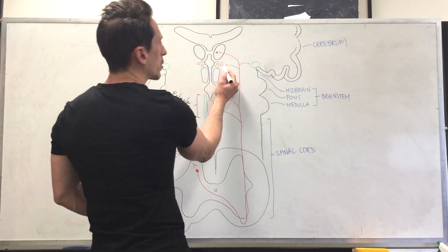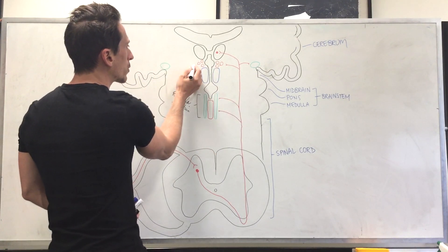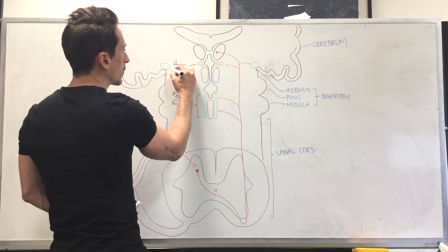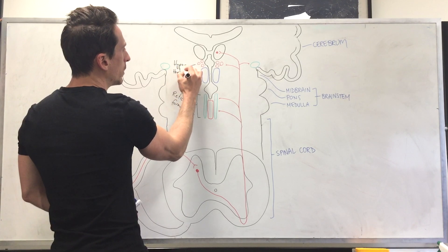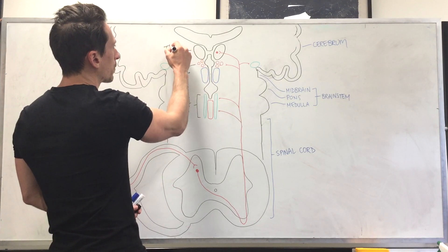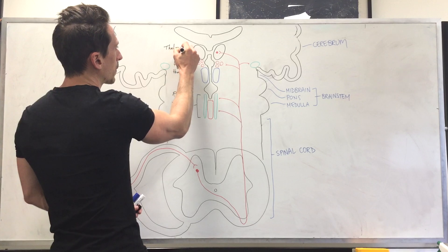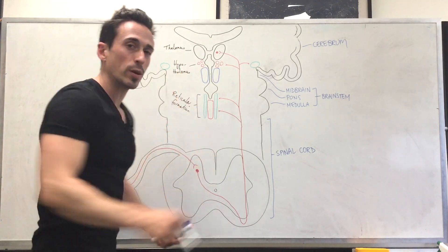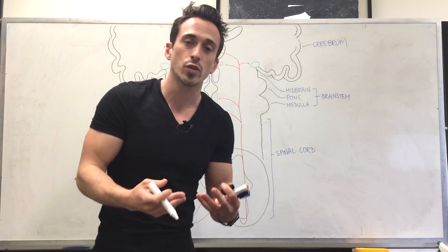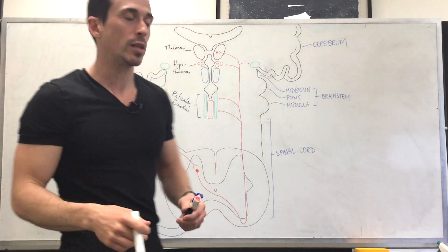As it continues to go up, it's also going to talk to this area here. This is called the hypothalamus. Now we know that the hypothalamus, hypo meaning below, thalamus, this is the thalamus here. The hypothalamus is the master regulator for the endocrine system, but also fight and flight. So that's the stress response, stimulating the release of adrenaline and noradrenaline.